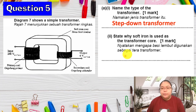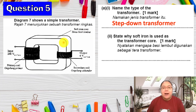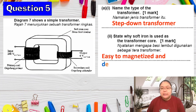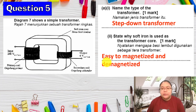Number two, we need to state why soft iron is used. From the diagram, they mentioned there's soft iron. Normally the question asks about soft iron — we just give one answer: it is easy to magnetize and also demagnetize. So anything about the soft iron core, this should be the answer.